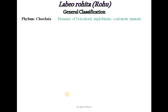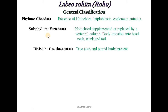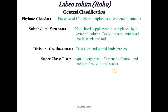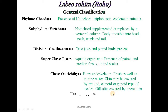The general classification of Labeo: it belongs to phylum Chordata because of the presence of notochord; it is a triploblastic, coelomate organism. Subphylum is Vertebrata. Division is Gnathostomata because true jaws and paired limbs are present. Class is Pisces as it is an aquatic organism with paired and median fins, gills, and scales. Subclass is Osteichthyes because it has a bony endoskeleton, freshwater as well as marine habitat, skin covered by cycloid, ctenoid, or ganoid scales, and gill slits covered by operculum. Family is Cyprininae and genus is Labeo.